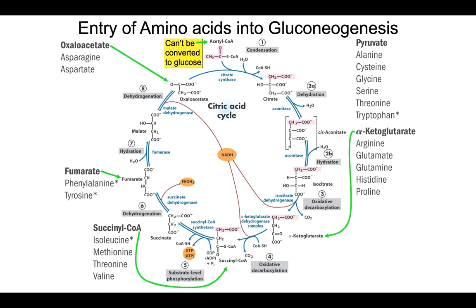There are many amino acids that are glucogenic, meaning they can be converted to glucose. These amino acids are first converted into intermediates of the citric acid cycle. Arginine, glutamate, glutamine, histidine, and proline can be converted to alpha-ketoglutarate, which can then be converted to oxaloacetate — now we're in familiar territory and that oxaloacetate can be converted to glucose. Isoleucine, methionine, threonine, and valine can all be converted to succinyl-CoA, another citric acid cycle intermediate, which can also be converted to oxaloacetate. One important note: acetyl-CoA, which is what pyruvate can be converted into, cannot be converted into glucose — that particular step is irreversible.